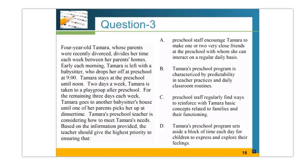In this question we have four-year-old Tamara with a very unstable home situation. The question seeks the highest priority for her teacher. A is wrong because the teacher doesn't directly contribute to that priority. B is correct because her school environment should be predictable and based on daily routines for her to feel safe. C and D are not the correct answers. The correct answer is B.